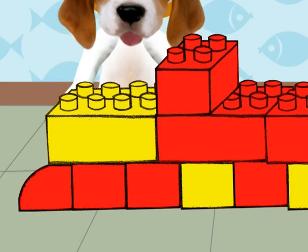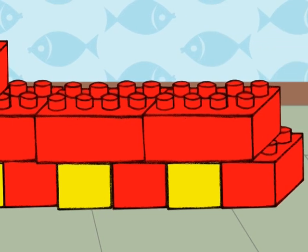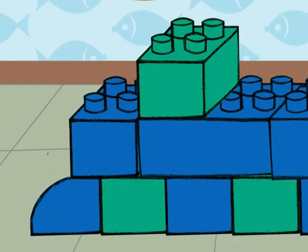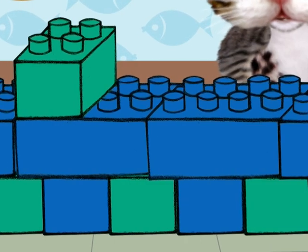Así, el tren de Pepe tiene muchas piezas rojas y pocas piezas amarillas. Y el tren de Katy tiene muchas piezas azules y pocas piezas verdes.